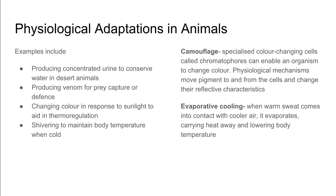Within animals, physiological adaptations include producing concentrated urine to conserve water, producing venom for prey capture or defence, changing colour in response to sunlight to aid thermoregulation, and shivering to maintain body temperature when cold. To camouflage, organisms have specialised colour-changing cells called chromatophores that enable them to change colour, and a physiological mechanism to move pigment to and from cells, changing their reflective characteristics. Animals also have evaporative cooling, where warm sweat comes into contact with cool air, allowing the sweat to evaporate and carry heat away, lowering body temperature.